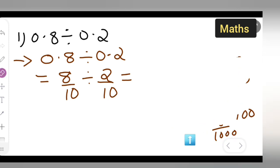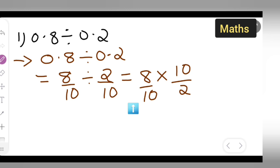Now write down this 8 upon 10. You'll have to write it as: in place of divide, you will put multiply sign, and then reciprocal of 2 upon 10. Reciprocal means you'll flip it, so it will be 10 upon 2.